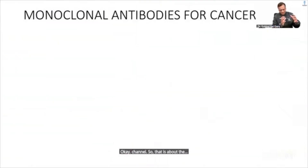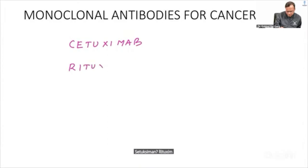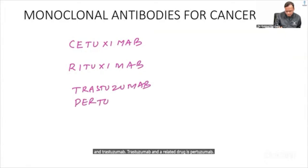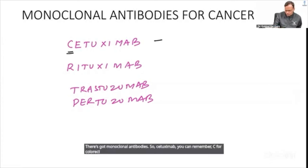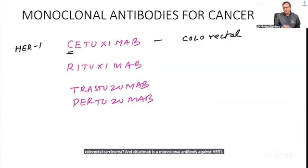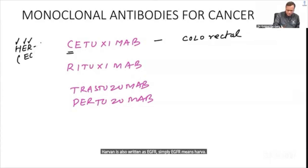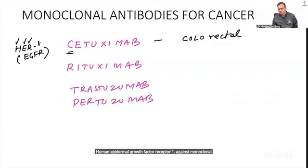Now covering monoclonal antibodies used in cancer. Three important ones: Cetuximab, Rituximab, and Trastuzumab. Cetuximab — C for colorectal carcinoma — is a monoclonal antibody against HER1, also written as EGFR (human epidermal growth factor receptor 1), and is used for colorectal carcinoma.